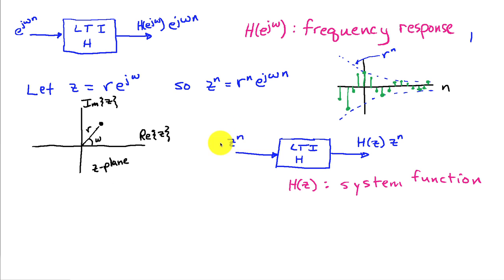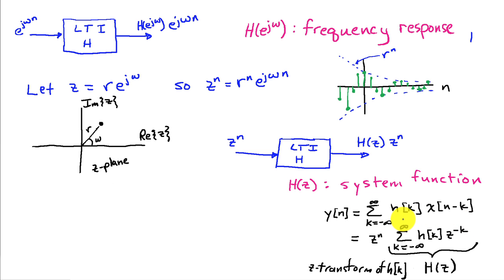If we apply input z^n, which is more general than the original sinusoidal input, it turns out the output is z^n multiplied by a complex number H(z). We call H(z) the system function, or sometimes the transfer function. Taking the convolution expression and substituting x = z^n, with a little algebra we can rewrite y(n) as z^n times the sum from k = −∞ to ∞ of h(k)·z^{−k}. This infinite sum is the system function H(z).